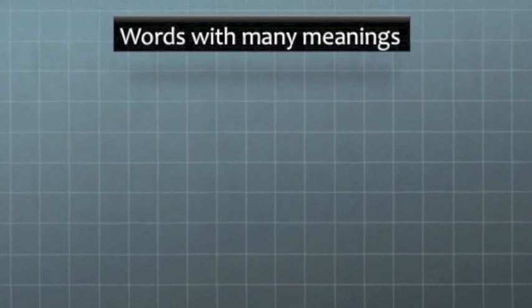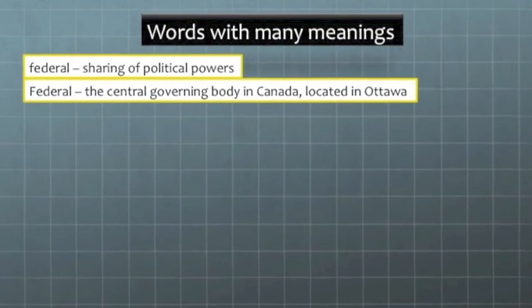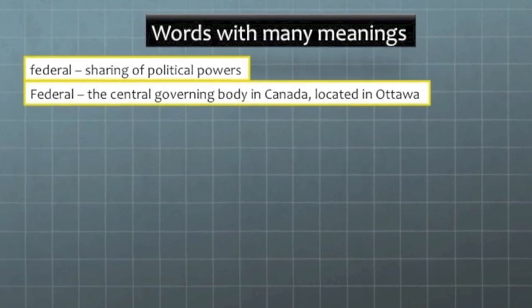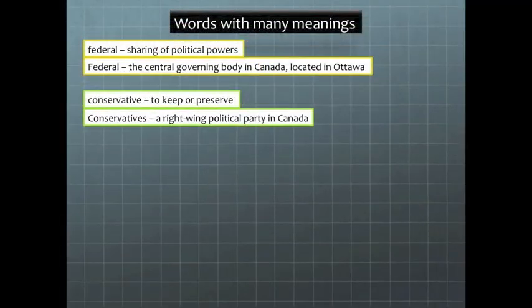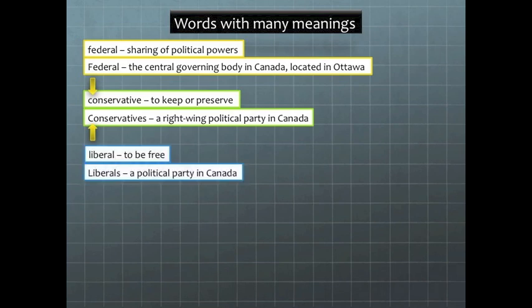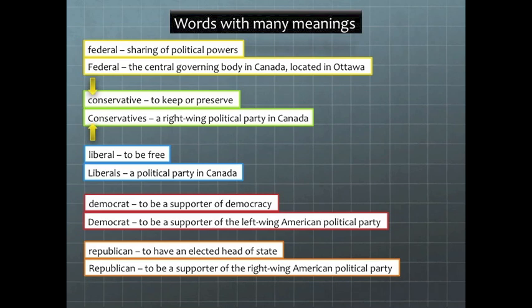One last thing before we're done: we always have to consider the context of a word to make sure we know what we're talking about. Remember how the word 'federal' can mean the sharing of powers, but 'the federal government' means the central government in Canada? Well, the name of a political party can also have another meaning. We'll use the phrase 'little c' to mean the word conservative — to conserve or keep — and 'big C' to mean the political party. 'Little l liberal' means to be free, but 'big L Liberal' means the government party who wants to encourage the use of social programs. 'Little d democrat' means you just believe in democracy, so pretty well all of us could be called democrats. And 'little r republican' means to have an elected head of state, so all Americans are little r republicans — but less than half of Americans would call themselves big R Republicans.